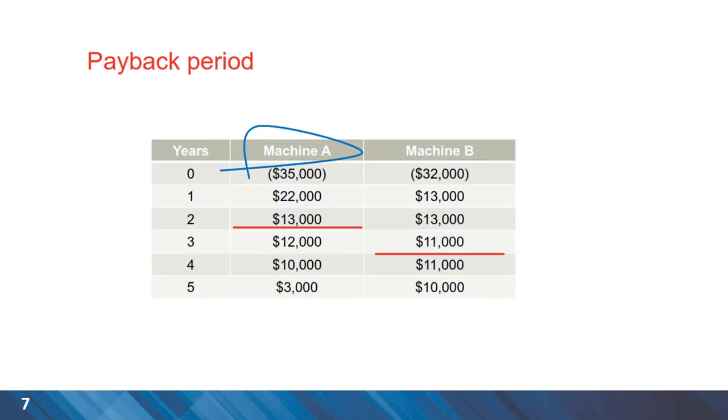Using that equation for payback period, Machine A will have a payback period of two years, and Machine B has a payback period of approximately three years. So using that model, Machine A is now the alternative of choice, which was different from the previous conclusion that we made based on smaller initial investment or capital cost.